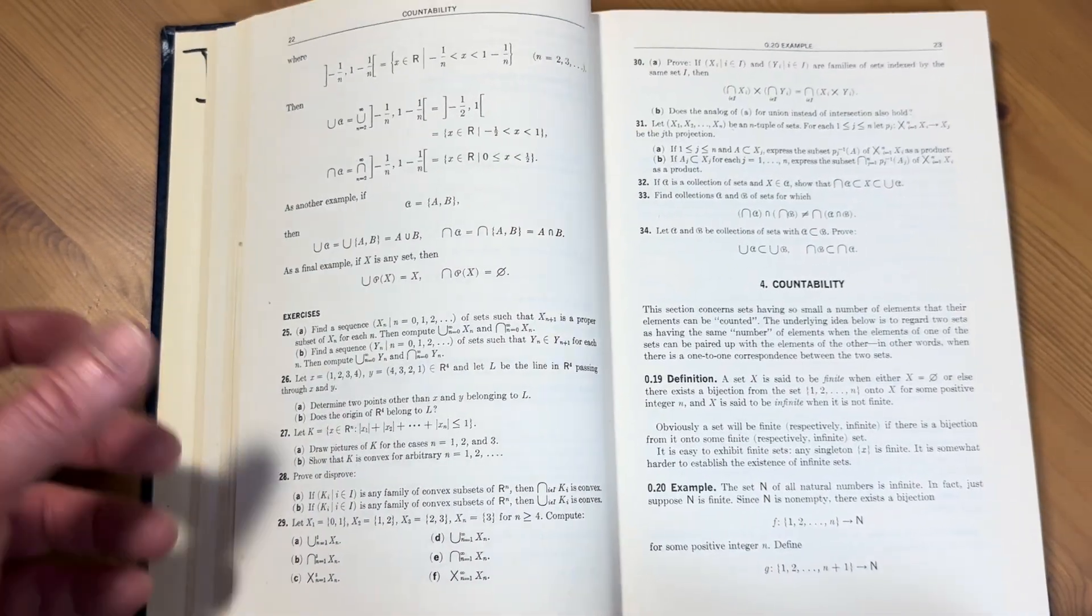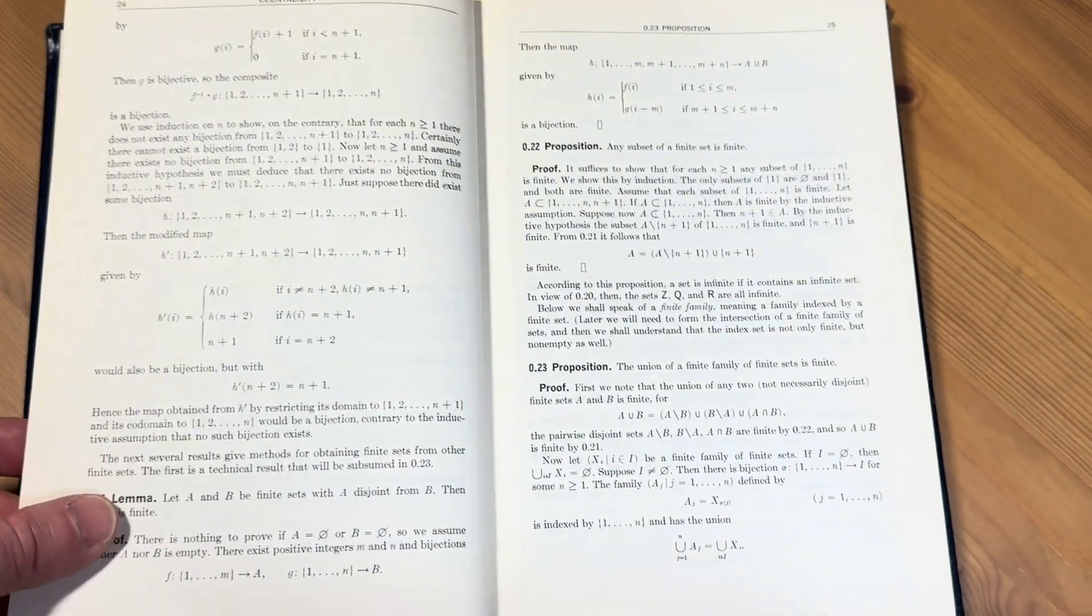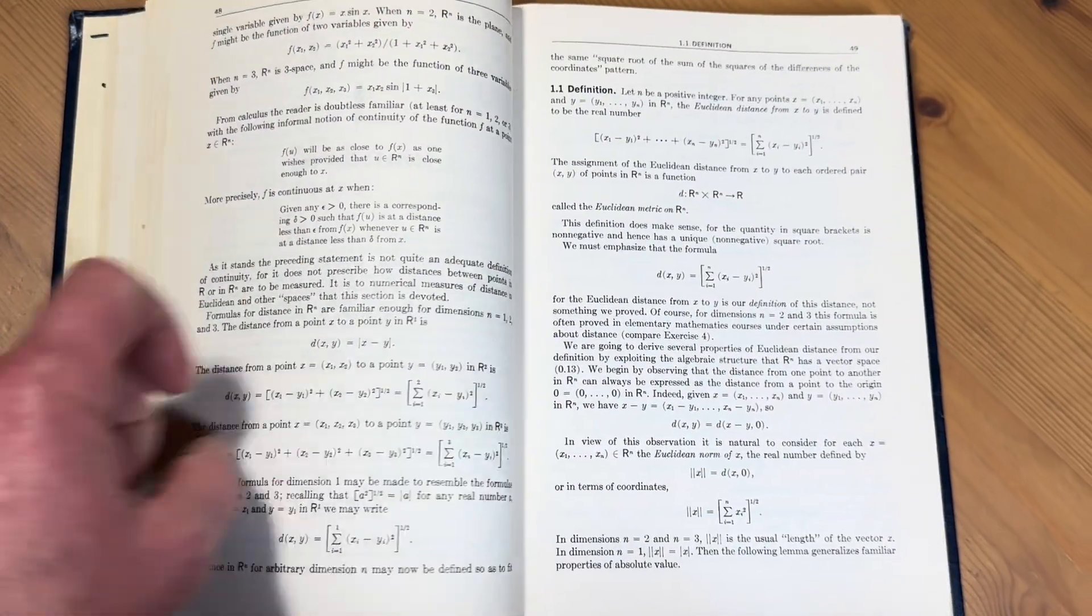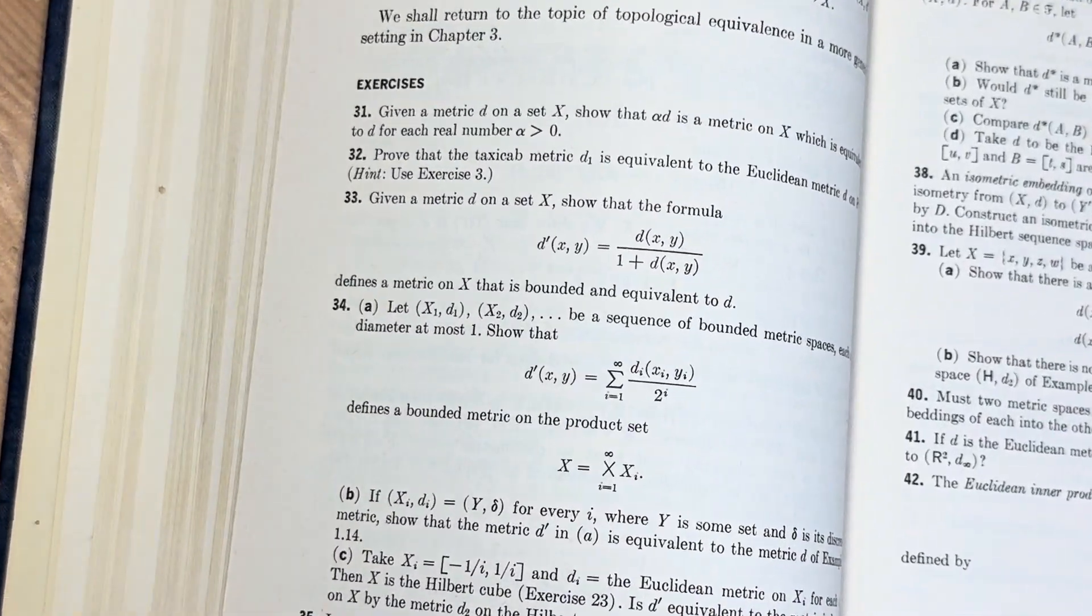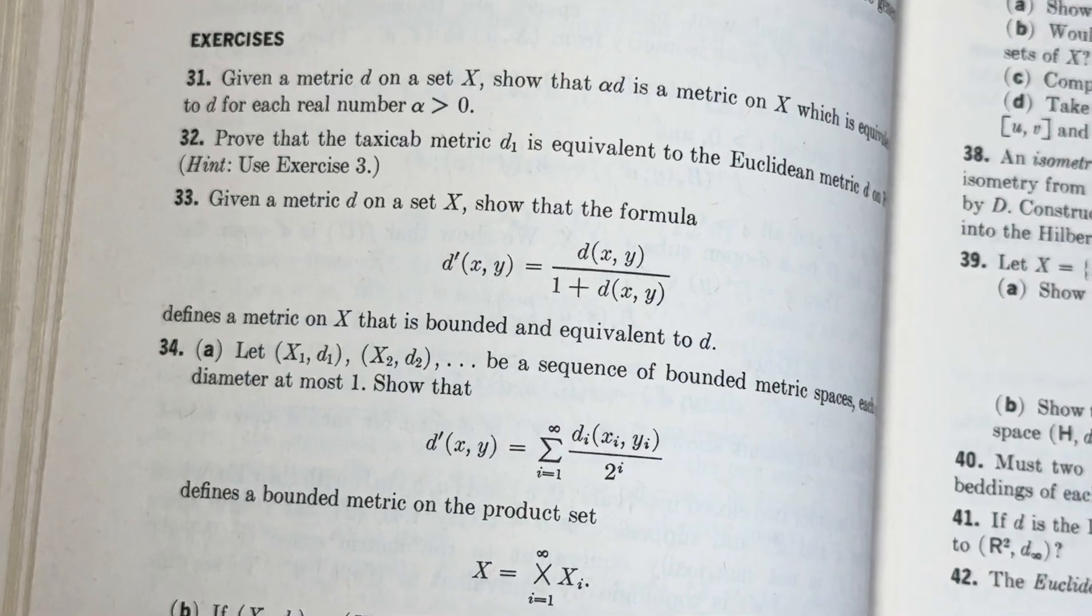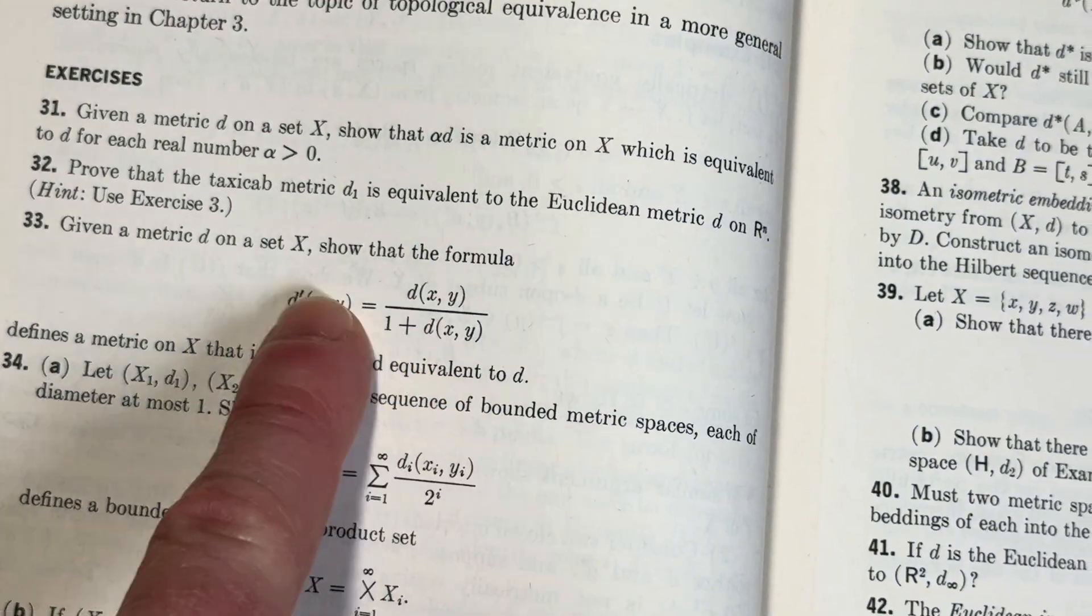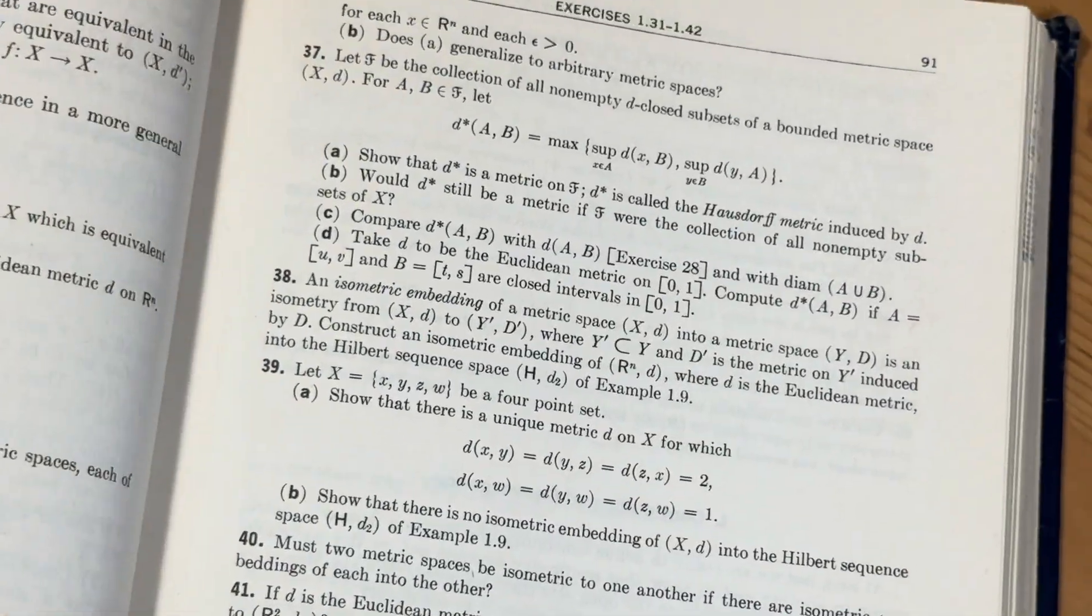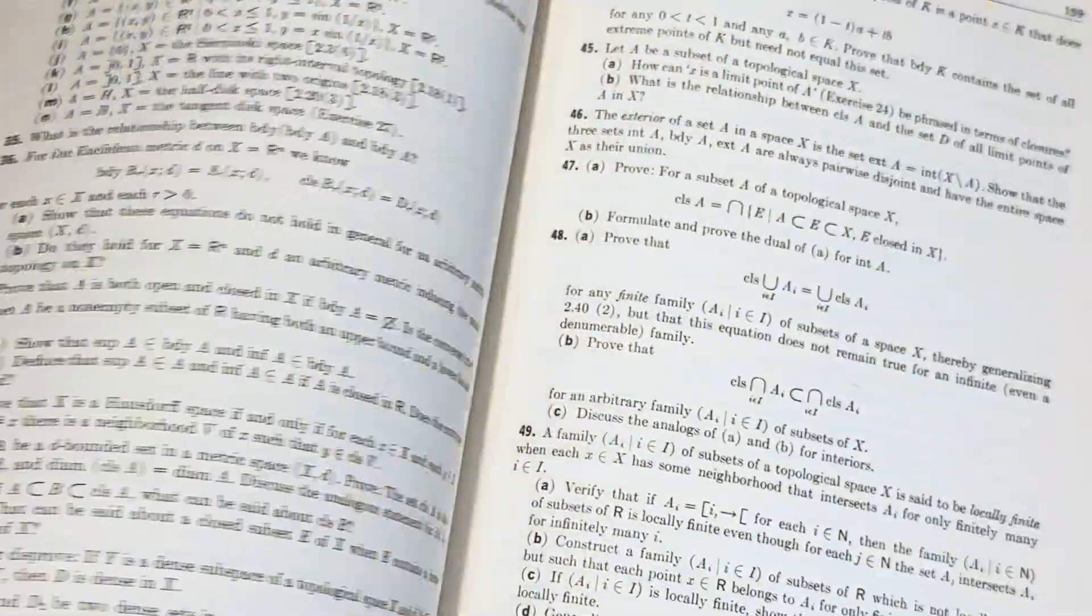And you'll want to know the inclusions for functions and stuff like, you know, f of a is contained in, you know, etc. You'll want to know all the set theoretic inclusions for functions. Now here's a common problem. Given a metric D on a set X, show that this formula defines a metric on X that is bounded and equivalent to D. Yeah. It's a common problem that you see. Yeah, but it's good stuff.